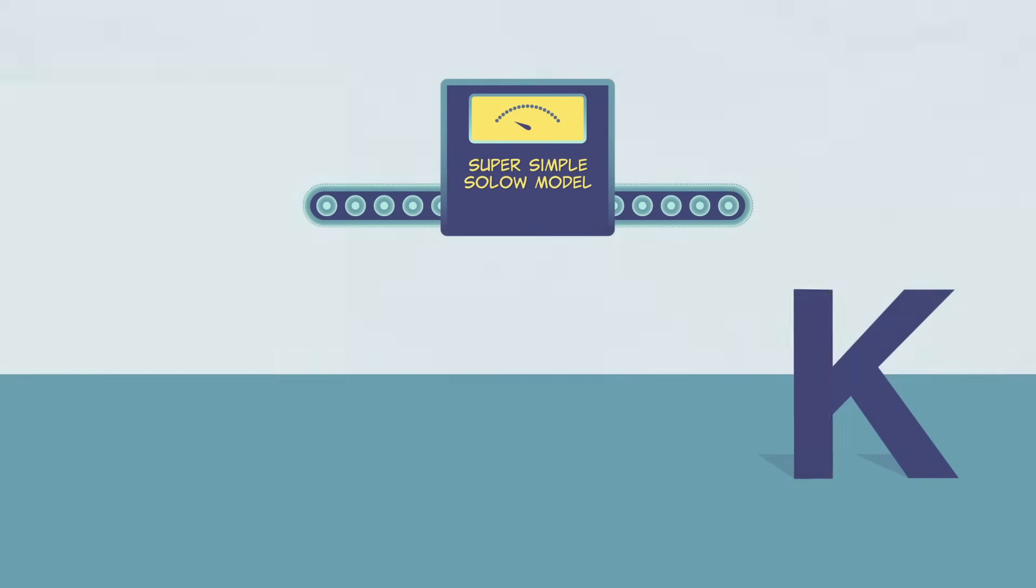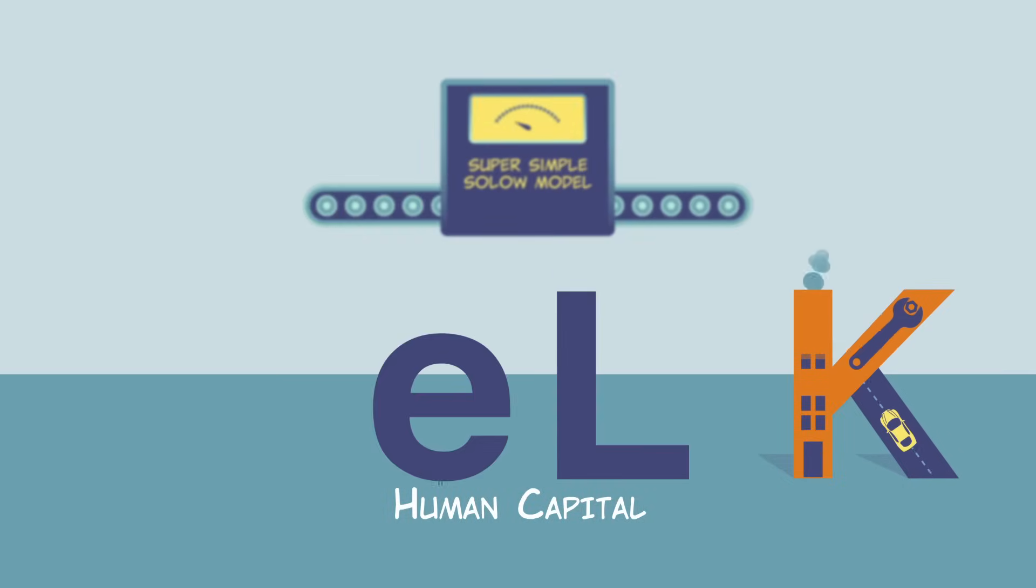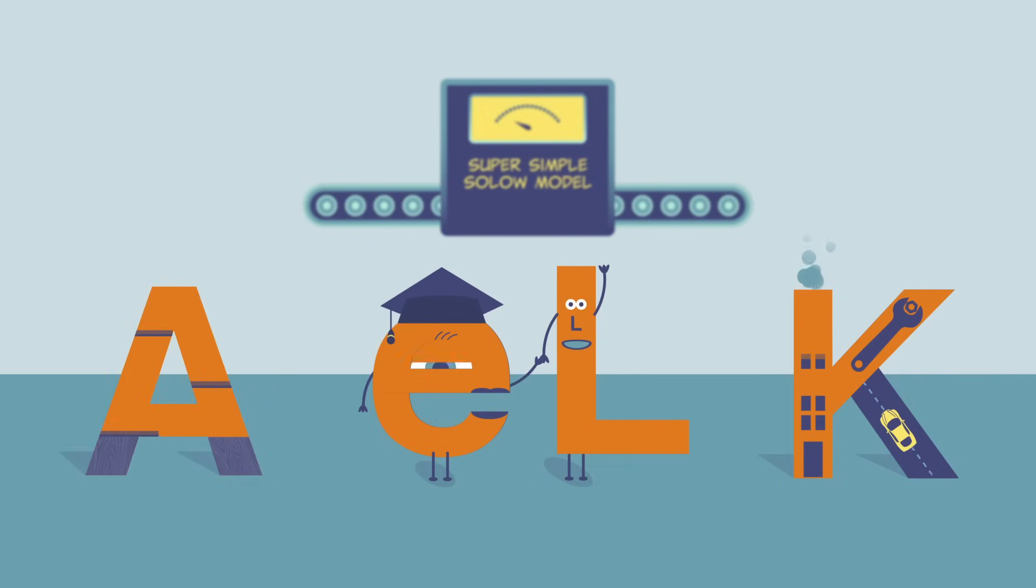In our last video, we introduced the variables in our super simple Solow model. We have physical capital, represented by K, human capital, represented by E times L, and ideas, represented by A.